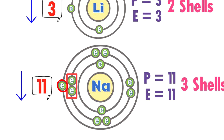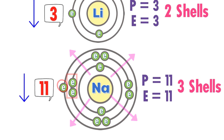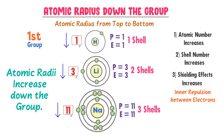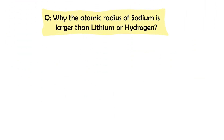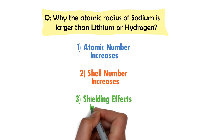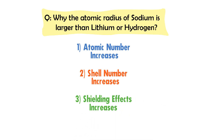Due to the shielding effect, electrons in the third shell experience less nuclear force of attraction and move away. To conclude, atomic radius increases down the group from top to bottom, because atomic number increases, the number of shells increases, and the shielding effect increases. Why is the atomic radius of sodium larger than lithium or hydrogen? It is because down the group atomic number increases, number of shells increases, and shielding effect also increases. Thus, atomic radius increases down the group.